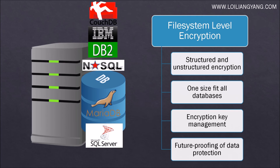At the same time, file system level encryption is agnostic to the type of database you're using. The encryption occurs at the file system level and can protect all types of databases, whether it's CouchDB, IBM DB2, NoSQL, MariaDB, or even Microsoft SQL Server.